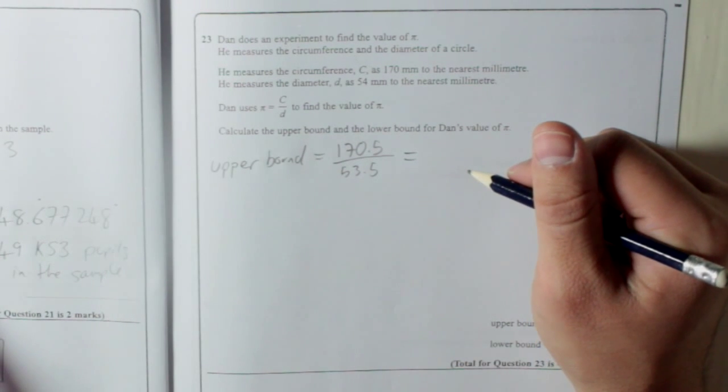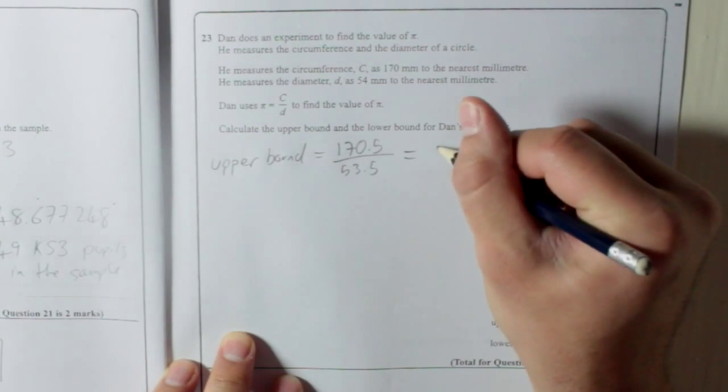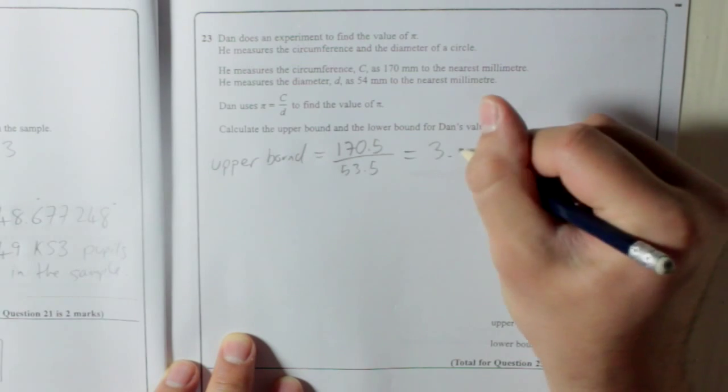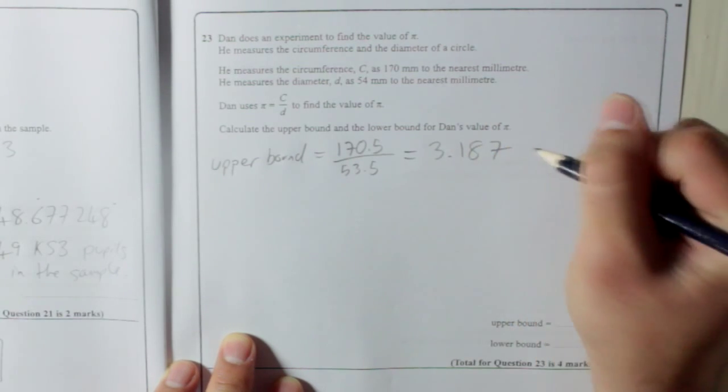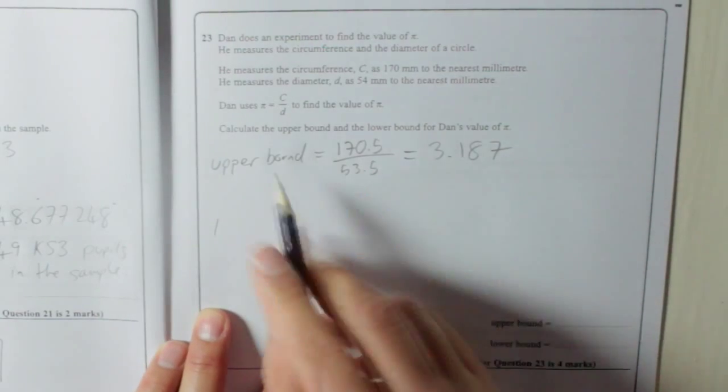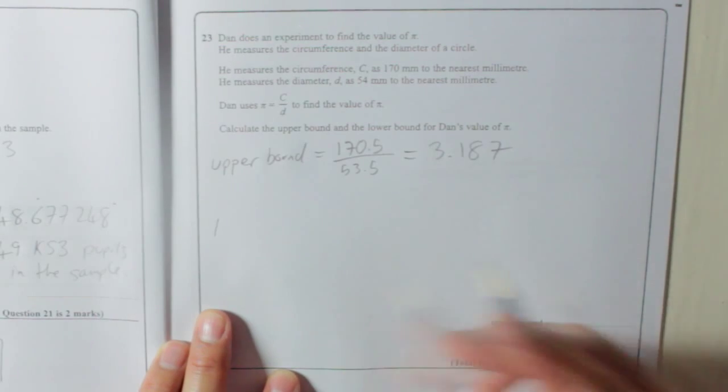Do I want to use a fraction? No. I'll just round. It's three decimal places, so 3.187, and there's nothing about rounding in it, so you've just got to use whatever rounding you want, basically.